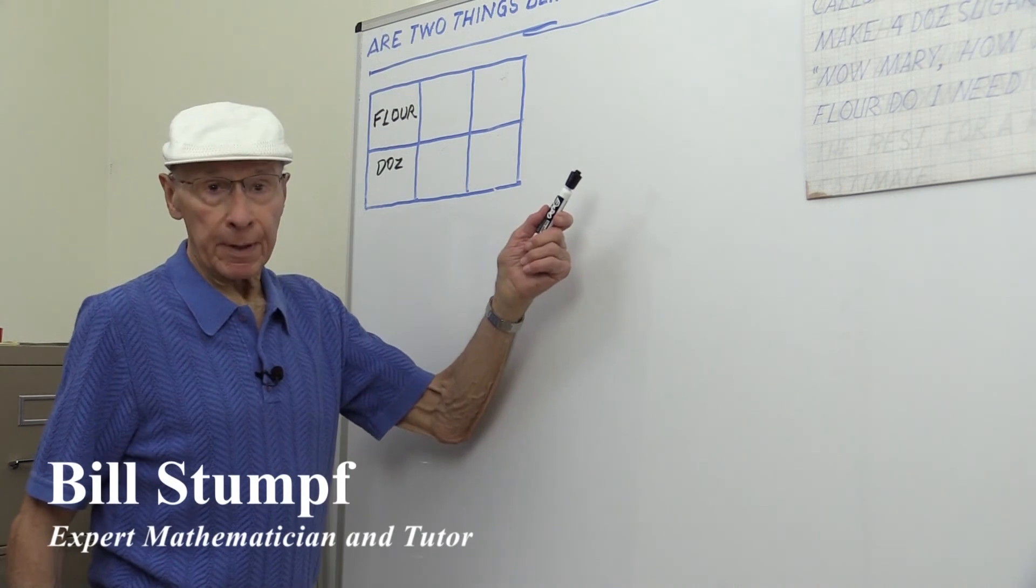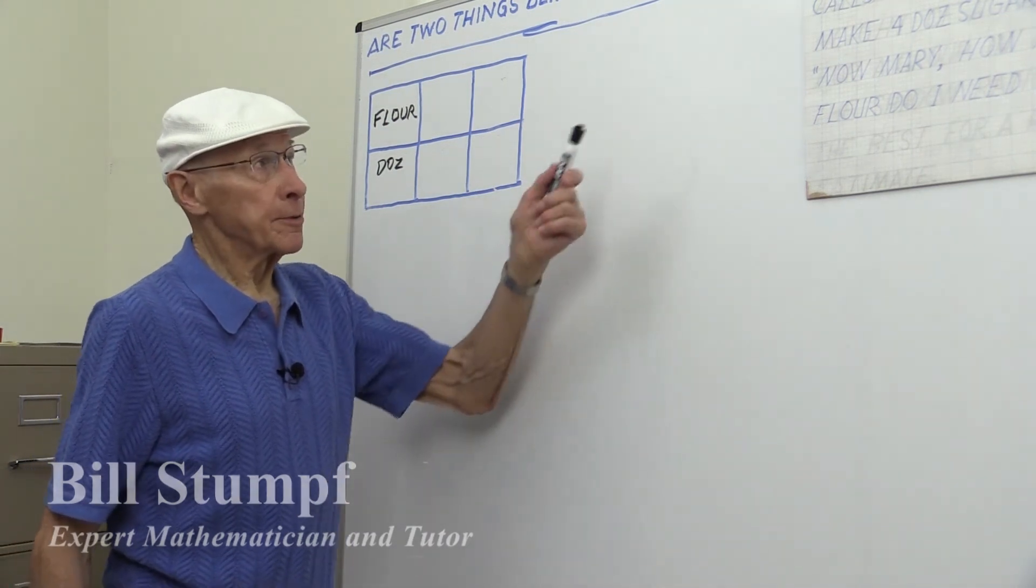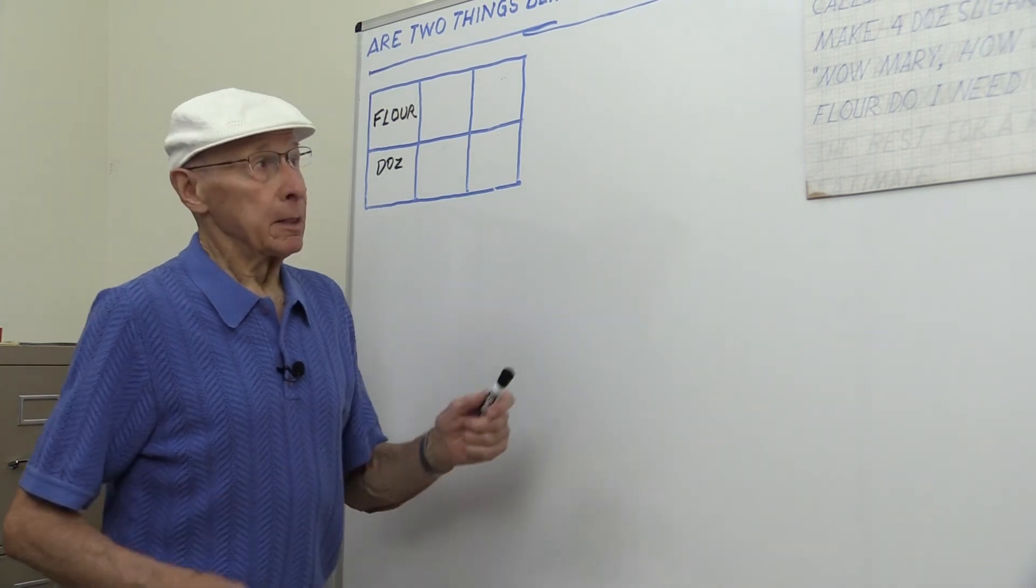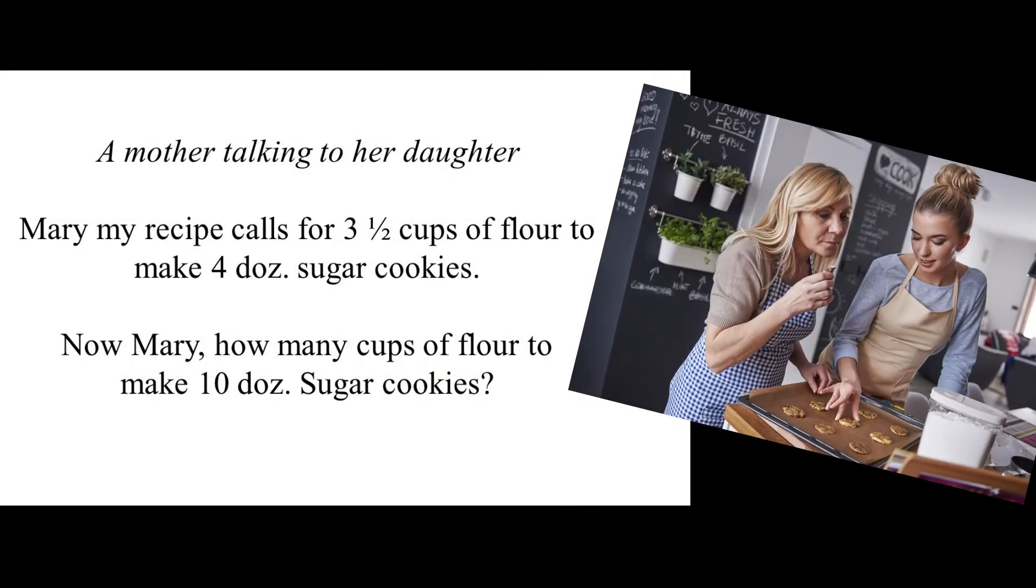Let's consider the following example: a mother and daughter are making sugar cookies. The mother says, "My recipe calls for 3½ cups of flour to make 4 dozen sugar cookies." The daughter says, "But Mom, I need 10 dozen," and what we don't know is how many cups of flour.